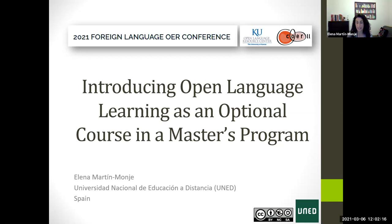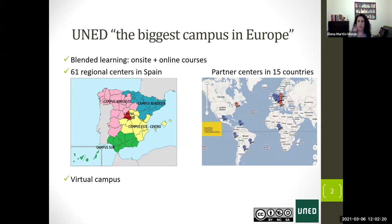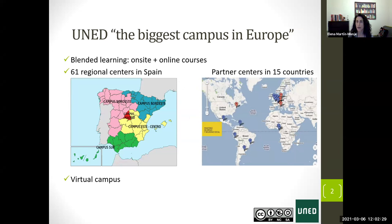My university is the distance learning university in Spain. Our chancellor says we are the biggest campus in Europe because our methodology is blended learning — we blend on-site with online courses. We have regional centers like different faculties, five campuses, with teaching teams based in Madrid and tutors all over Spain. We also have partner centers in 15 countries, including one in New York, so you can study at UNED from anywhere in the world. Our strength is the virtual campus.